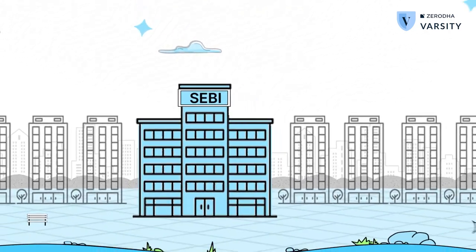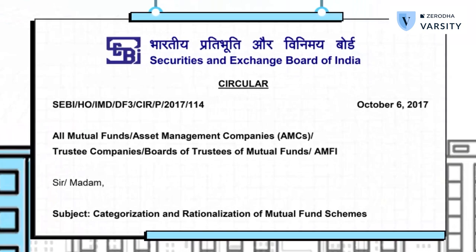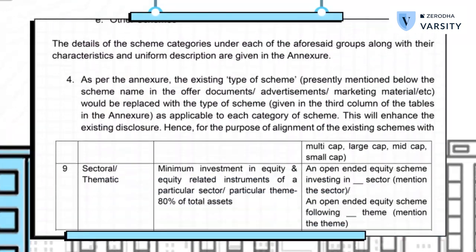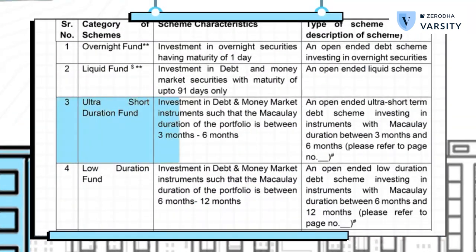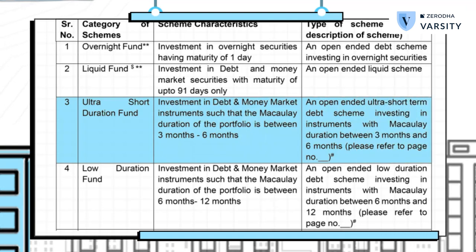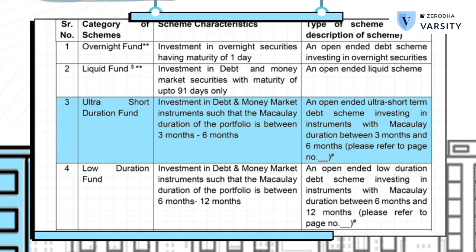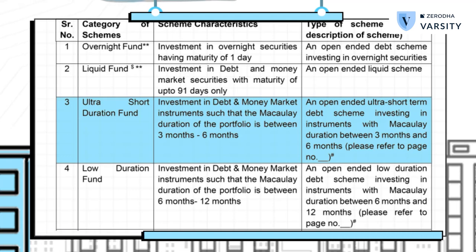One of the reasons why you need to understand these jargons is that the SEBI circular defines all debt funds on the basis of these terms. For example, check out the formal definition of an ultra short duration fund. According to this circular, an ultra short duration fund can invest in debt market instruments — basically commercial papers and bonds — with a maximum duration of 3 to 6 months. Debt instruments with 3 to 6 month duration implies short maturities.